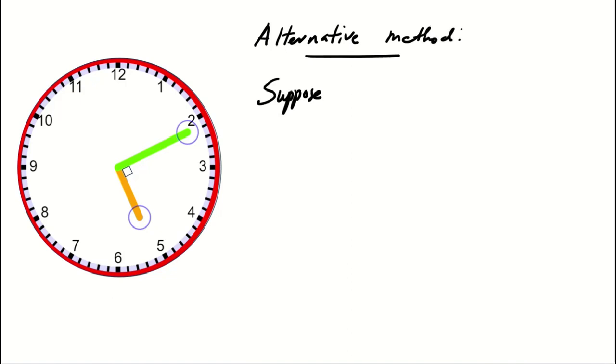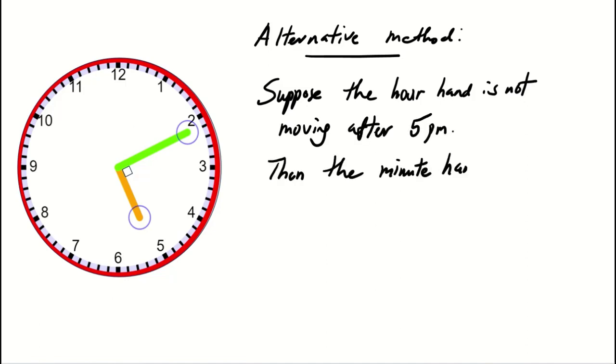If you assume the hour hand does not move from its position after 5 PM, the minute hand would need to move 10 minutes to form the first 90-degree angle.